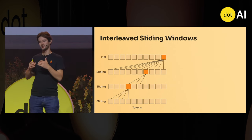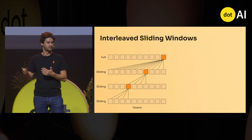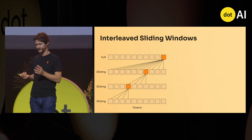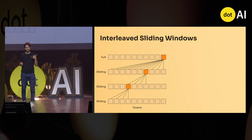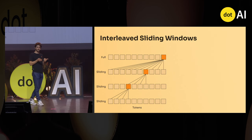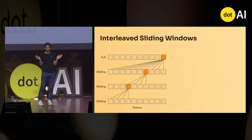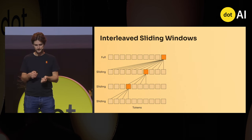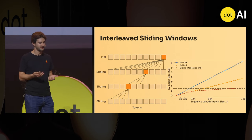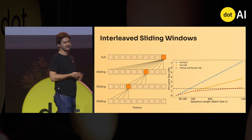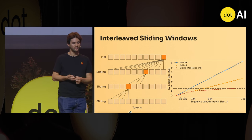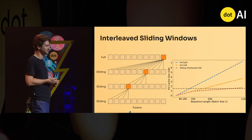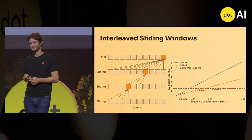Stacking those sliding layers, we found a trade-off between a model full of sliding windows versus having some layers that still have the standard full attention pattern. The sliding layer is faster and more memory-efficient because the KV cache is reduced — you only need to cache the past four tokens.